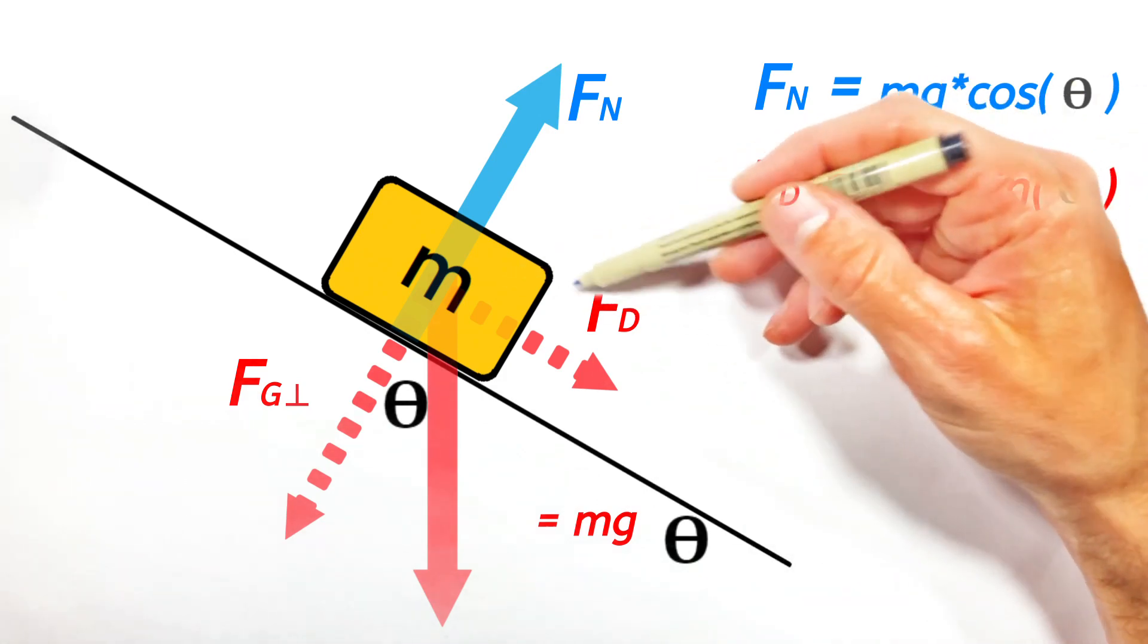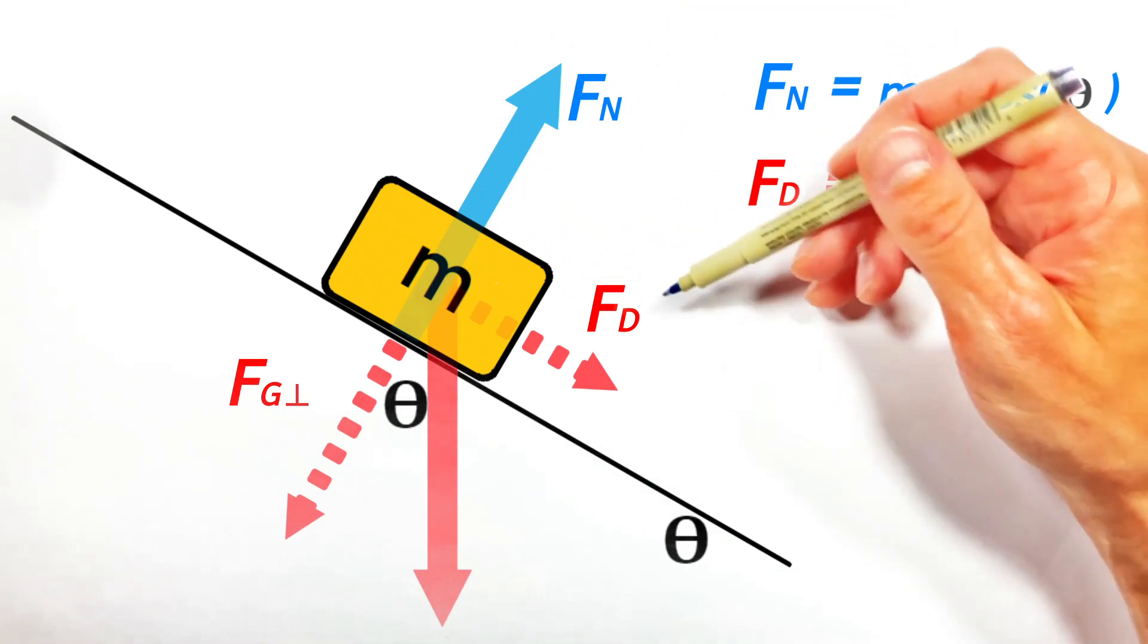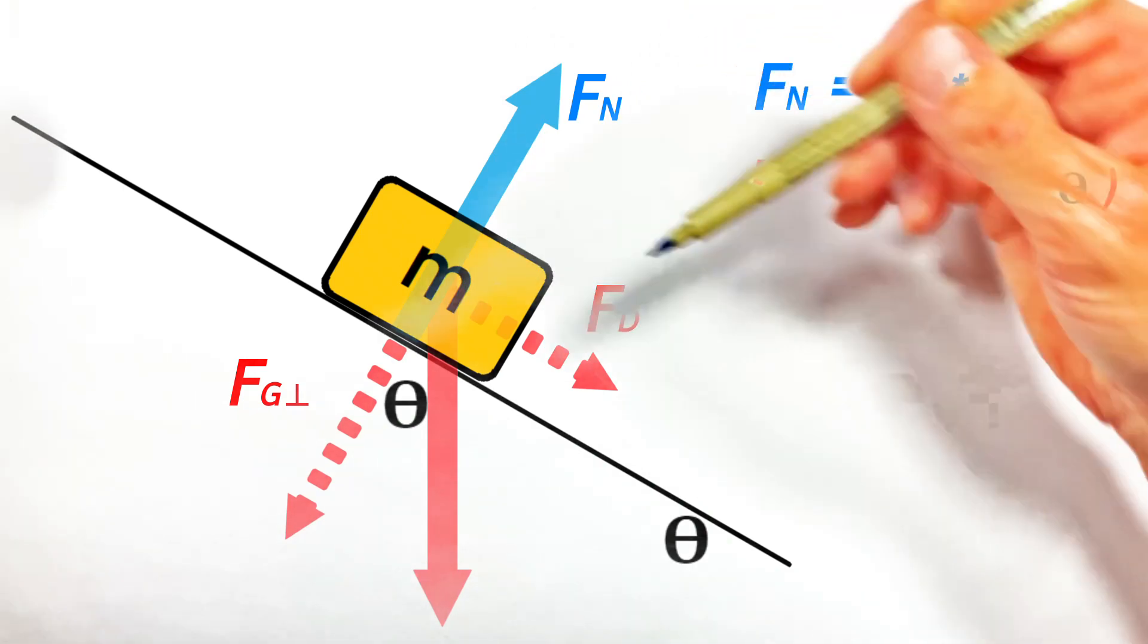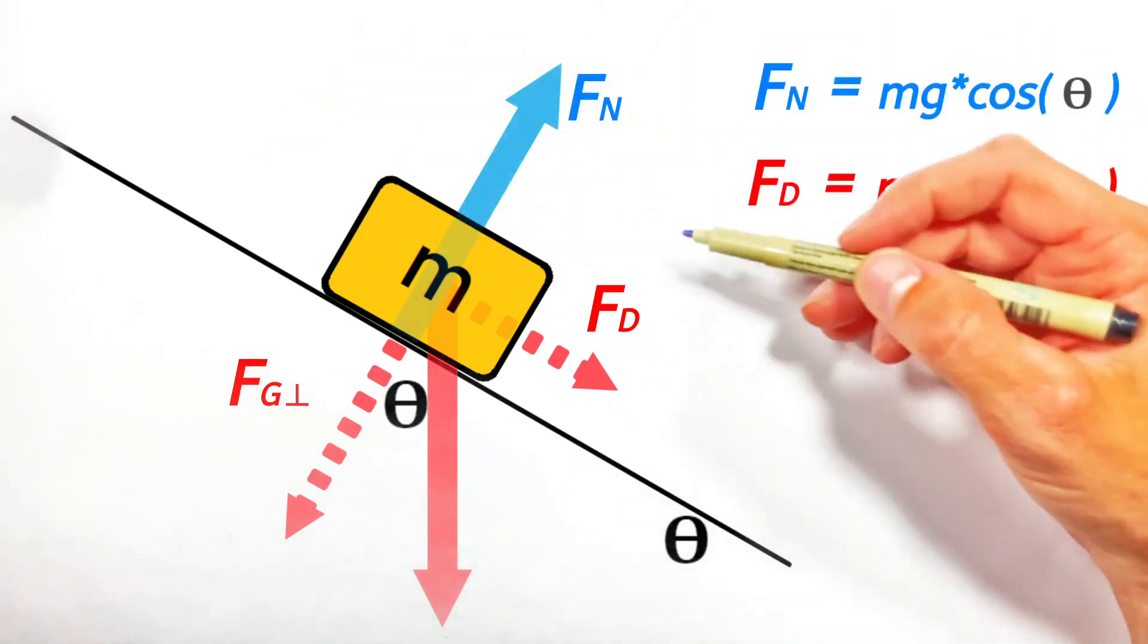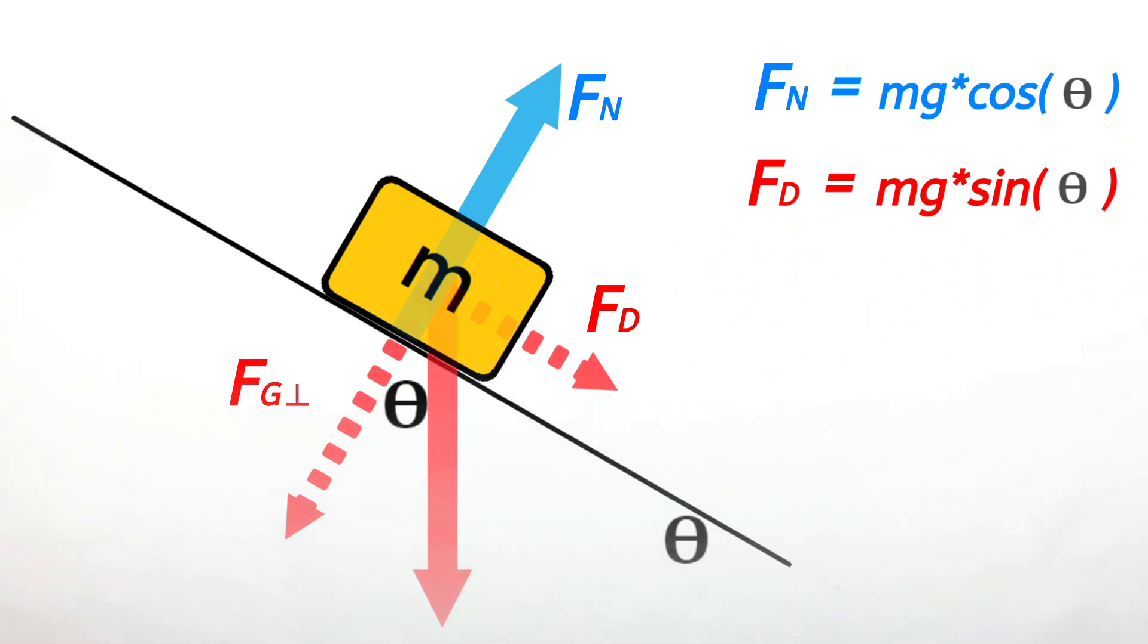But ultimately, it's this force down the hill, which is unbalanced, meaning there's nothing acting uphill on the block, that causes the block to slide down the hill. Now sure, if you were to add friction to this hill, or something like that, then the block may just sit still, but that's an issue for another day.